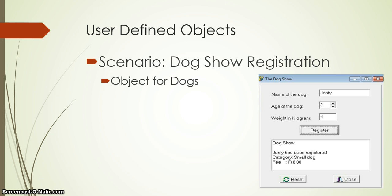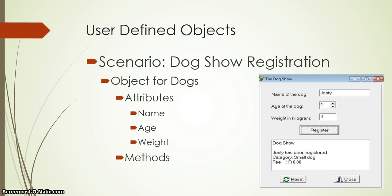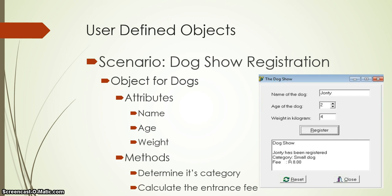This requires a bit of planning. We need to think about what we're going to store in our object. Some things I want to store — these are the attributes — are the name of the dog, the age of the dog, and the weight. There's more I could add, like breed, but we'll keep it simple. We also want to do certain things for each dog, like determine its category and calculate the entrance fee. These actions fall under the methods.